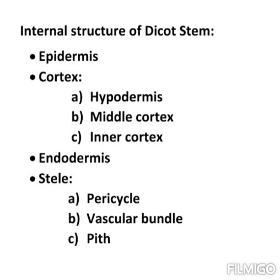To summarize the internal structure of dicot stem: Epidermis, then Cortex divided into three regions — hypodermis, middle cortex, and inner cortex — then Endodermis, and then Stele, which is again divided into three parts: pericycle, vascular bundle, and pith. Vascular bundle is conjoint, collateral, endarch, and open — C-C-E-O.